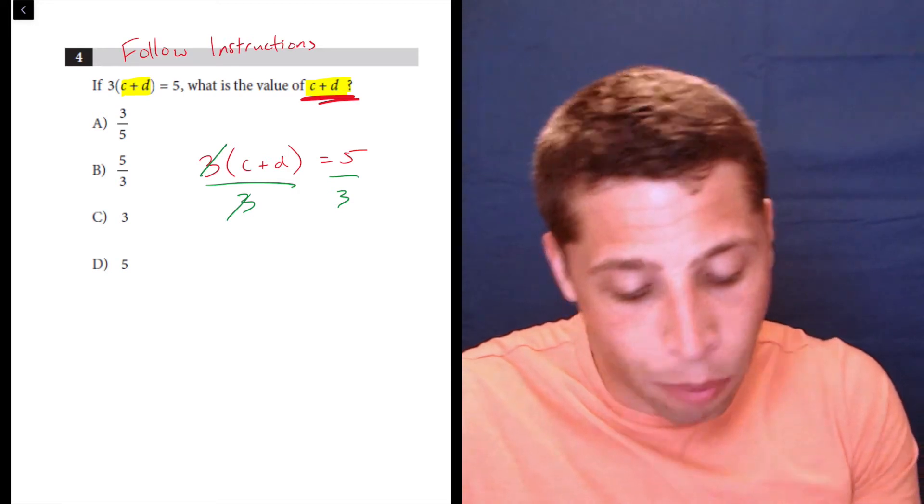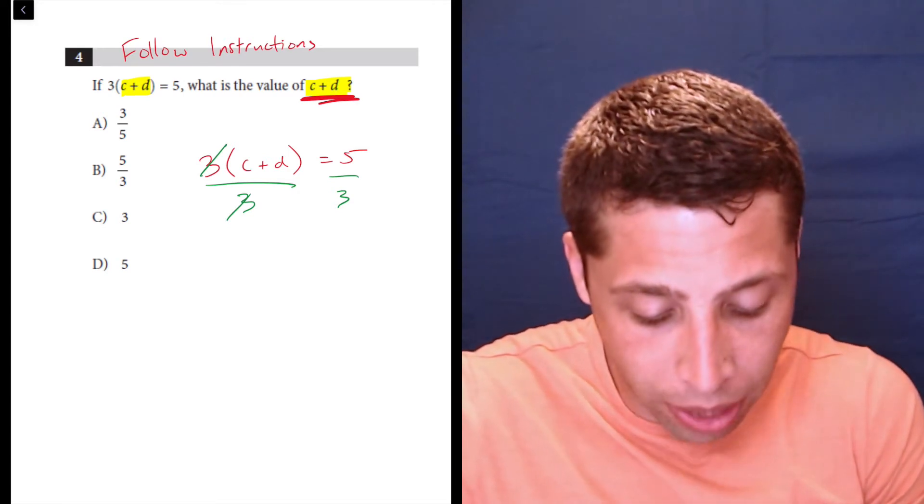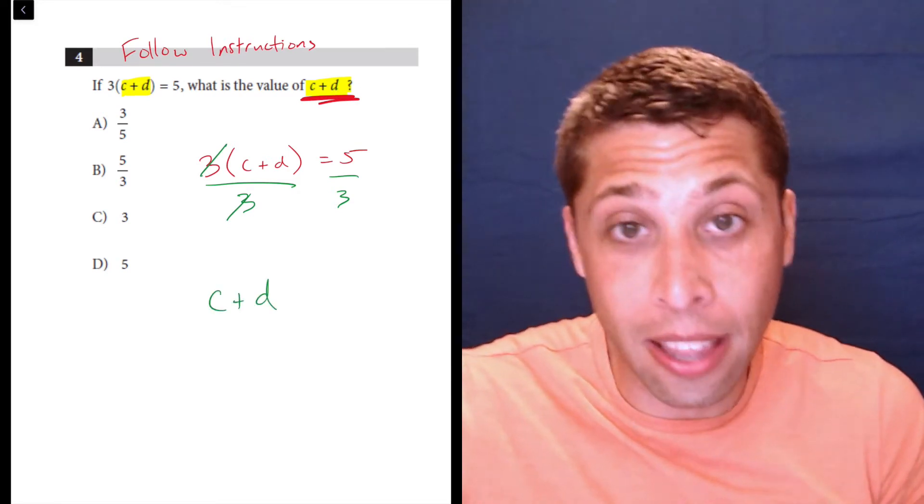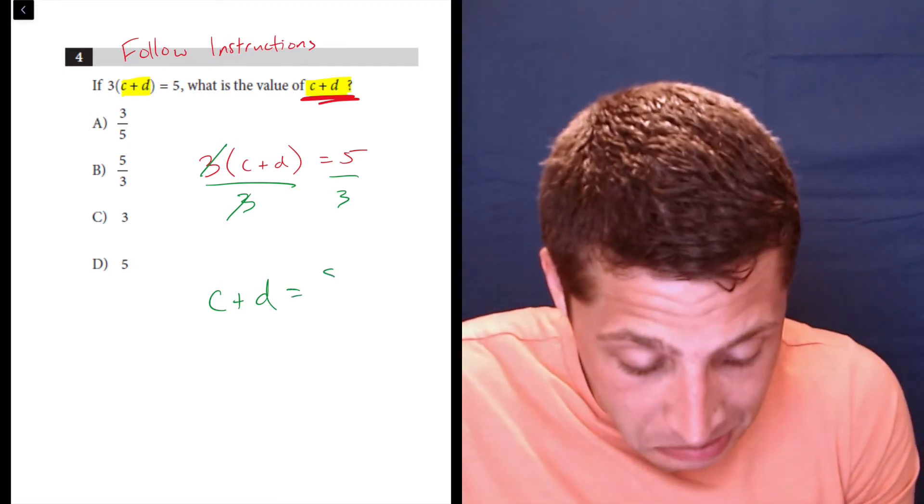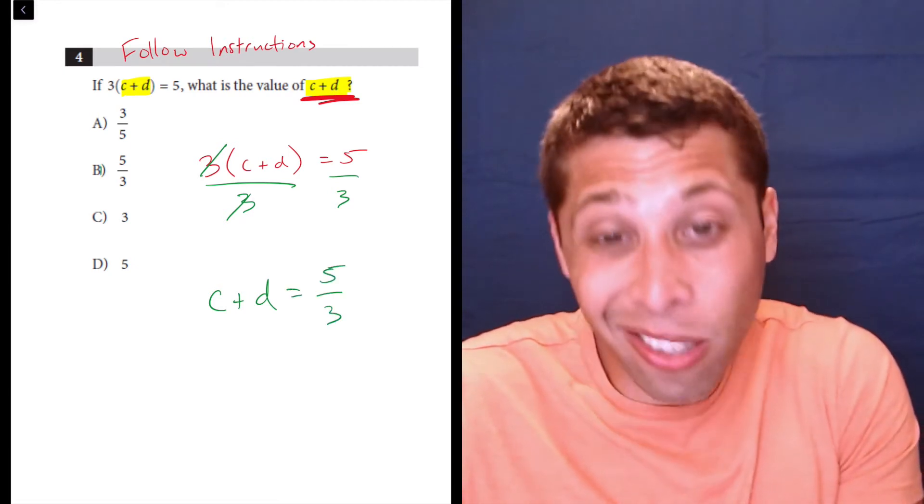The threes go away. And what are we left with on the left-hand side? We're left with c plus d, the thing we want. And what's it equal to? Five thirds. That's it. That's the whole question.